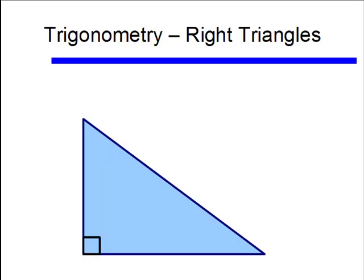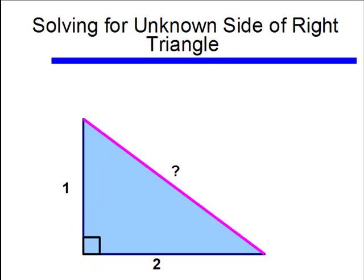First of all, we know about right triangles. We know this is a right triangle because we have a square in the corner, that square means it's a right triangle. And we know how to solve for a missing side using the Pythagorean theorem, which is a squared plus b squared equals c squared.